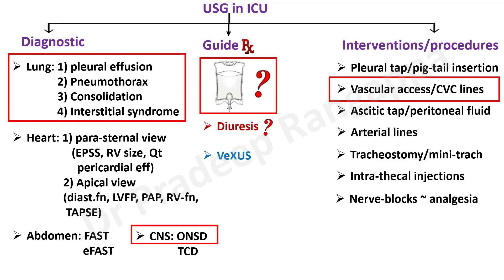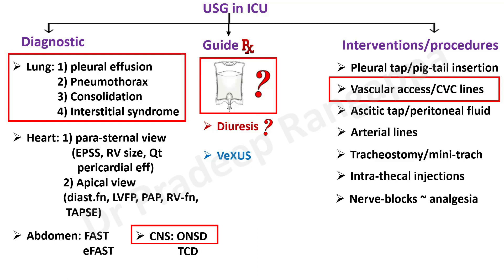Even tracheostomy can be done under ultrasound, as well as intrathecal injections where we give antibiotics intrathecally. Nerve blocks are predominantly the anesthesiologists' domain, especially in trauma patients or pancreatitis with severe pain — we put thoracic epidurals to relieve pain and optimize breathing. This recording for physicians will focus on what's marked in red, but today I'll mainly talk about lung ultrasound and the Blue Protocol, as the others are covered in my other videos.